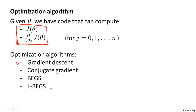Conjugate gradient, BFGS, and L-BFGS are examples of more sophisticated optimization algorithms that need a way to compute J of theta and the derivatives, and can then use more sophisticated strategies than gradient descent to minimize the cost function. The details of exactly what these three algorithms do is well beyond the scope of this course. In fact, you'd often end up spending many days or even weeks studying these algorithms in a class on advanced numerical computing. But let me tell you about some of their properties.